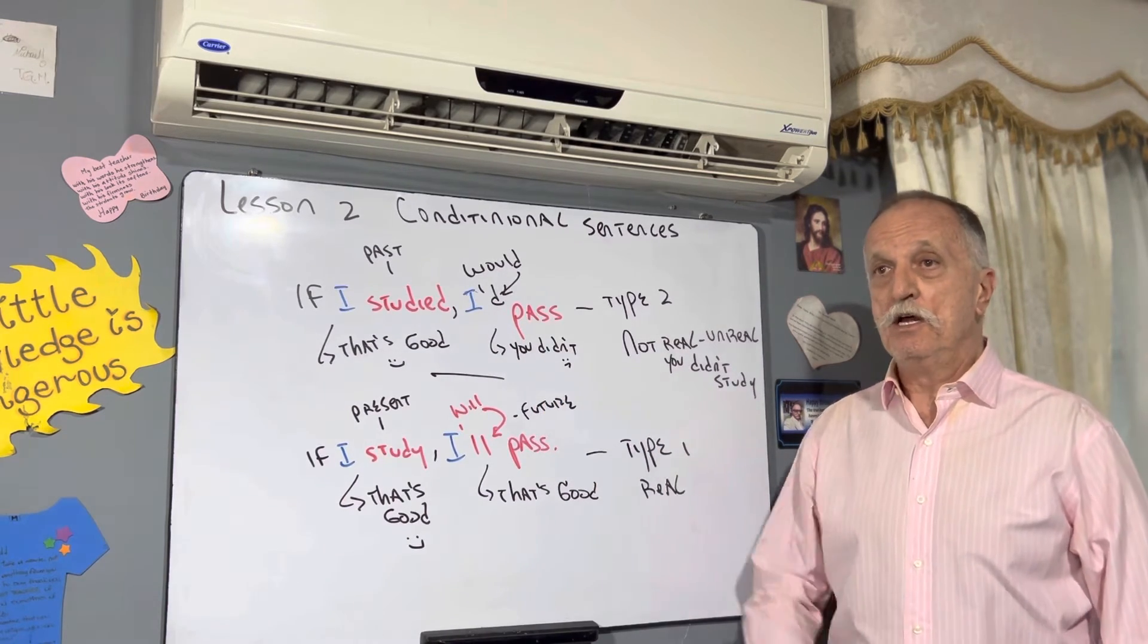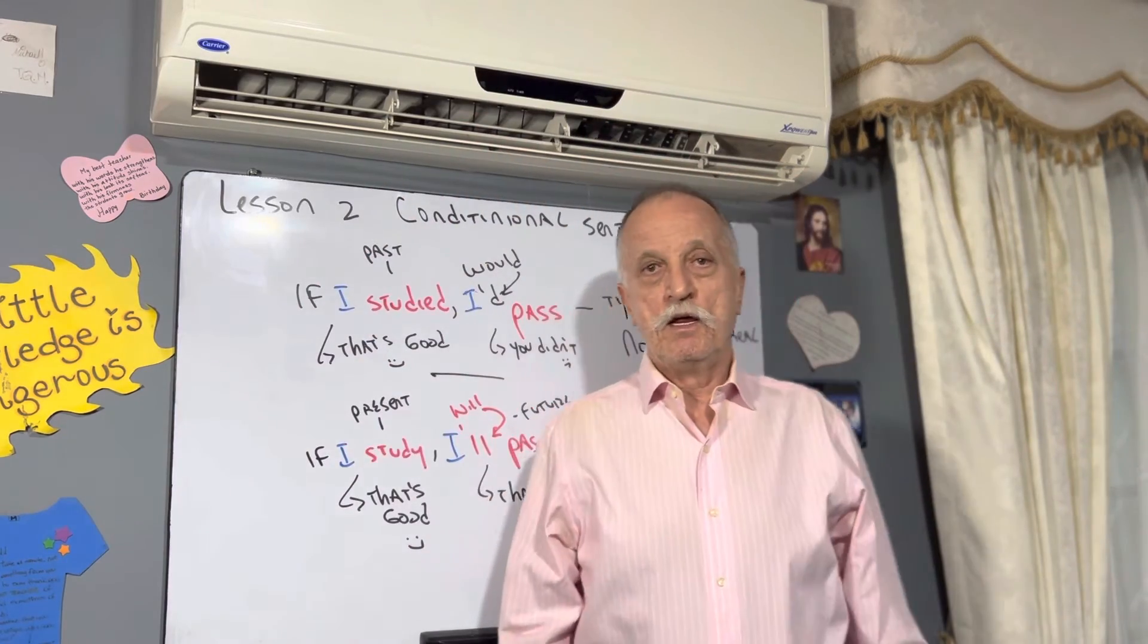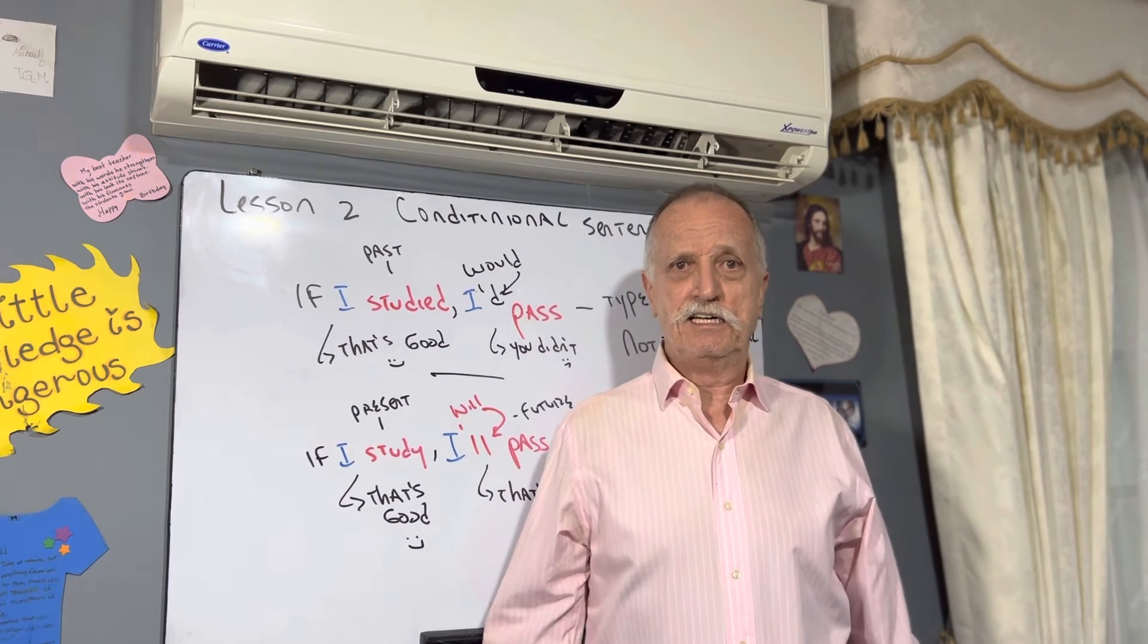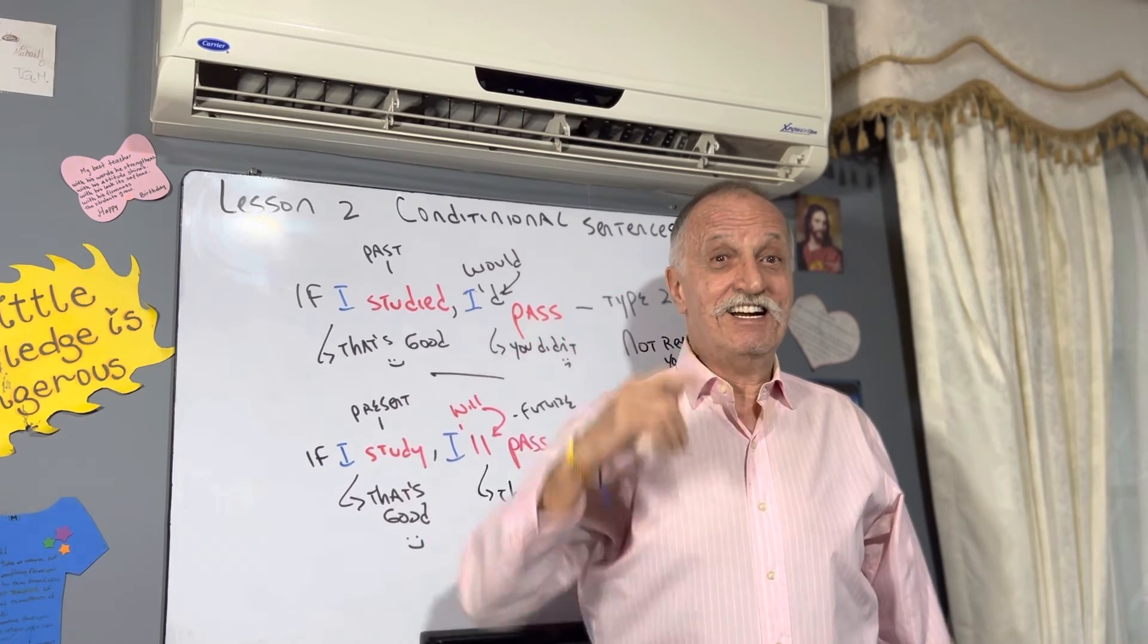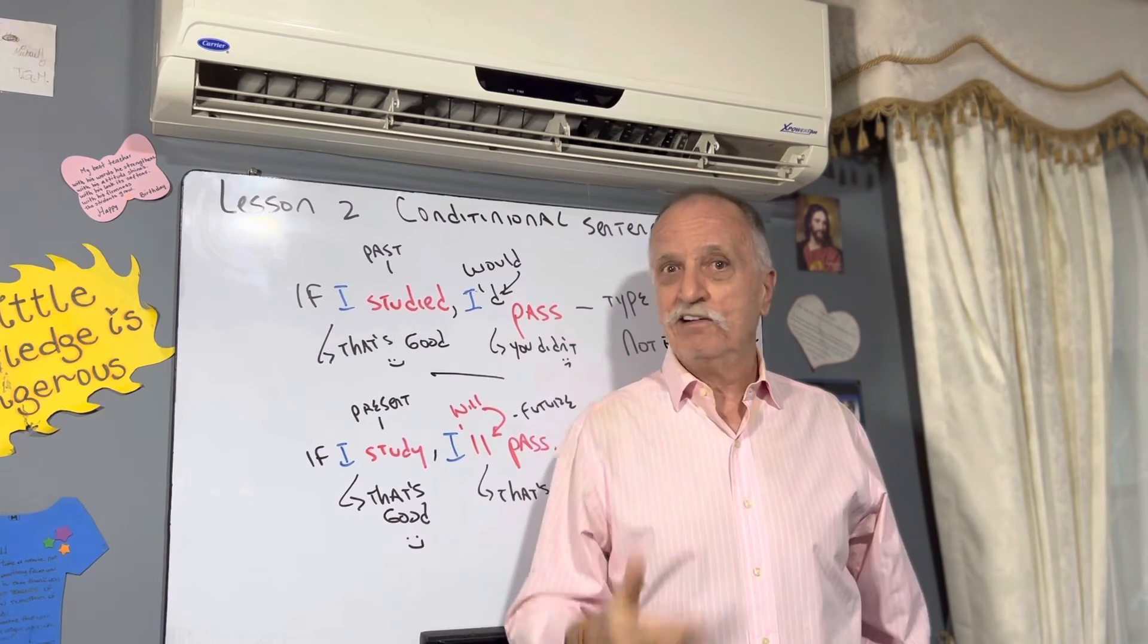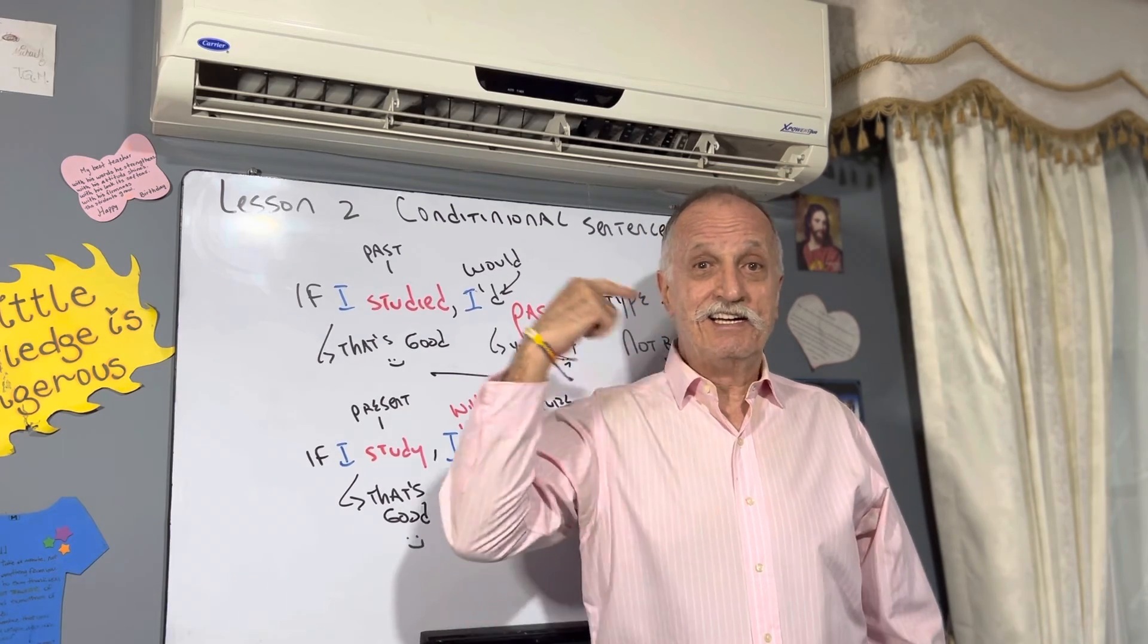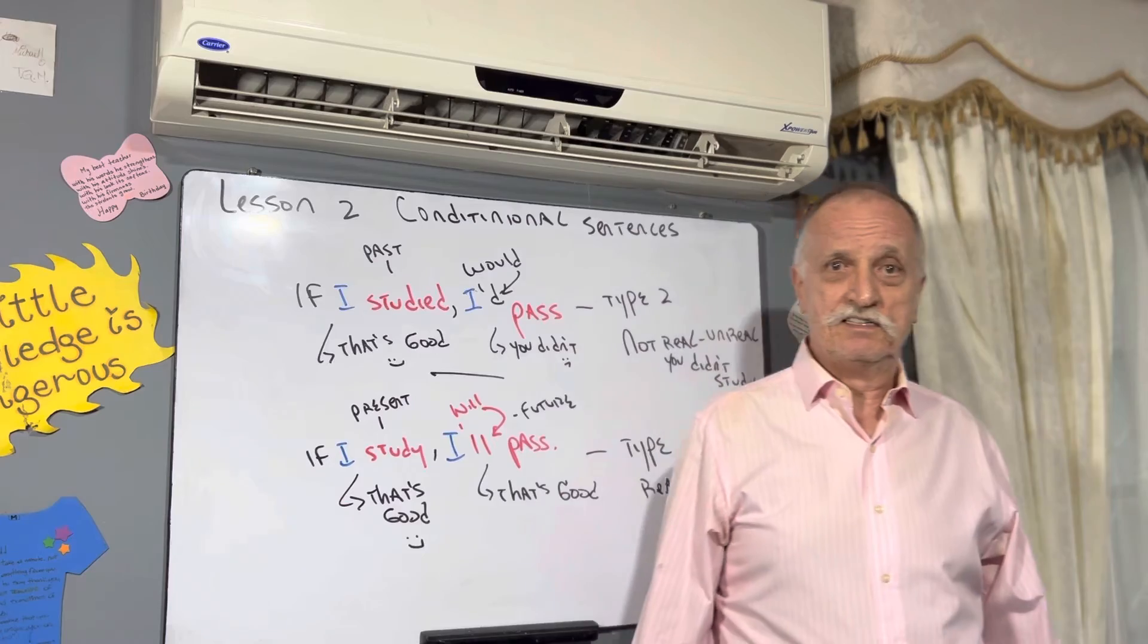Conditional sentences - one thing depends on another. If I had money, I would go. You don't have money. If I was handsome, I would have a nice girl. You're not handsome. Sorry Mike, you're the past. You're not handsome anymore.